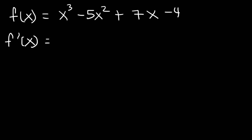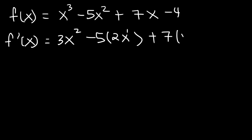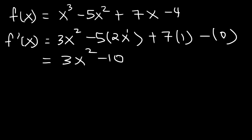All you need to do is find the derivative of each term separately. Using the power rule, the derivative of x cubed is 3x raised to the 3 minus 1, or 3x squared. Using the constant multiple rule, the derivative of 5x squared is 5 times the derivative of x squared, which is 2x to the first power. The derivative of x is simply 1, and the derivative of a constant is 0. So 5 times 2x is 10x, giving us the answer: 3x squared minus 10x plus 7.